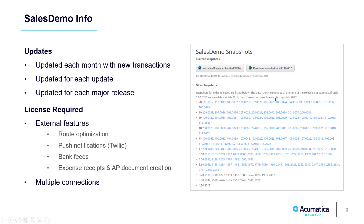The sales demonstration data is updated every month, providing new transactions so that you always have a fresh snapshot to work with. Every time an update from one build to the next is released, it is posted to the portal. Each major release also adds the new features so you can easily demonstrate them.